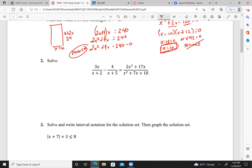We have 3x over x plus 2 minus 4 over x plus 5 equals 2x squared plus 17x over x squared plus 7x plus 10. Looking at this, we're going to want to factor this. And it factors to x plus 2, x plus 5. So now that is my least common denominator: x plus 2 and x plus 5. So we'll want to multiply both sides by it.